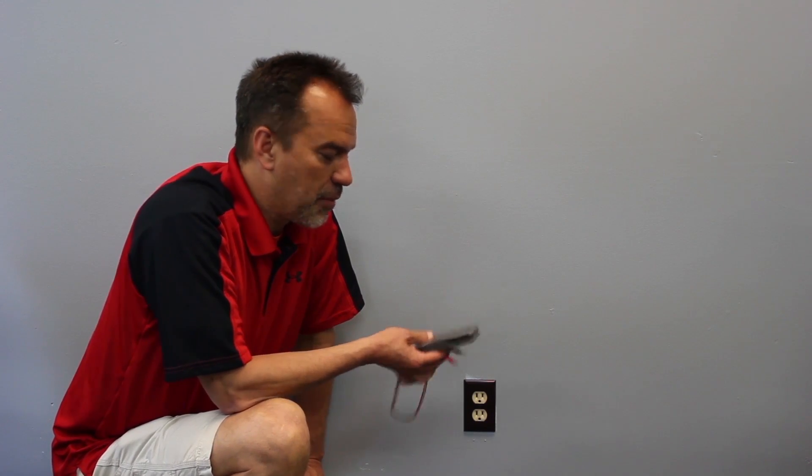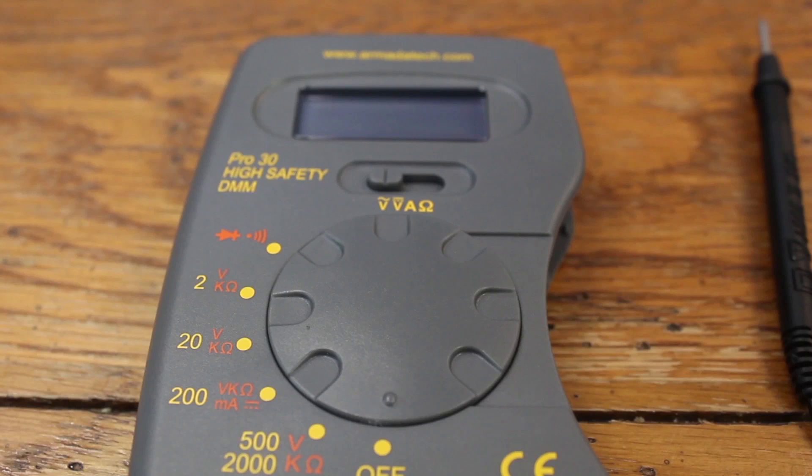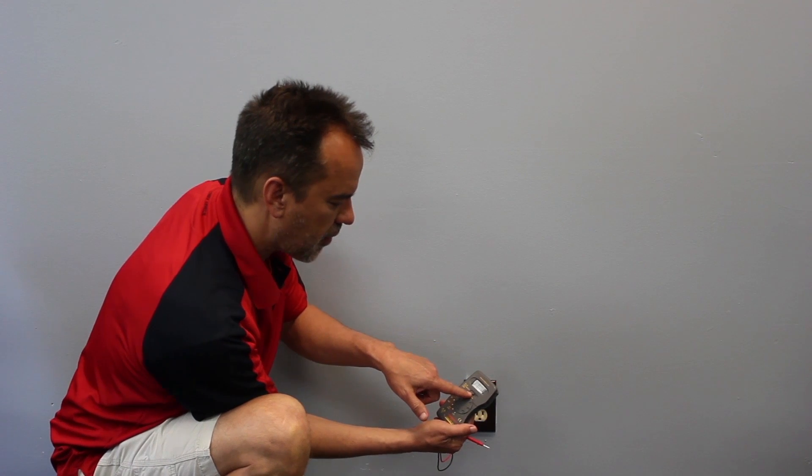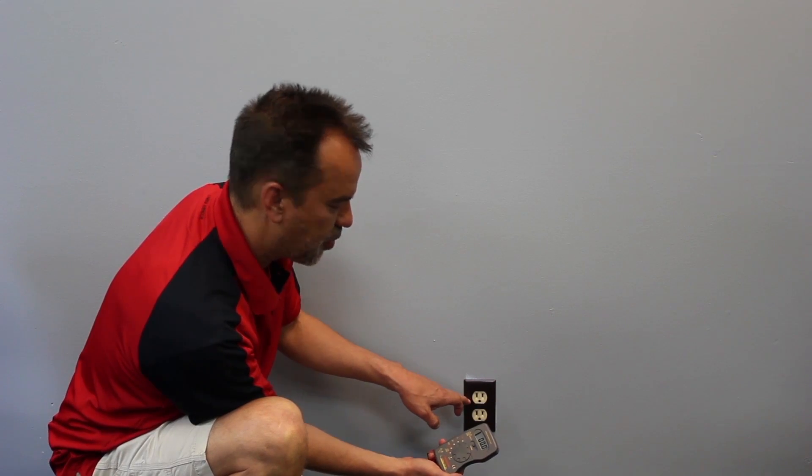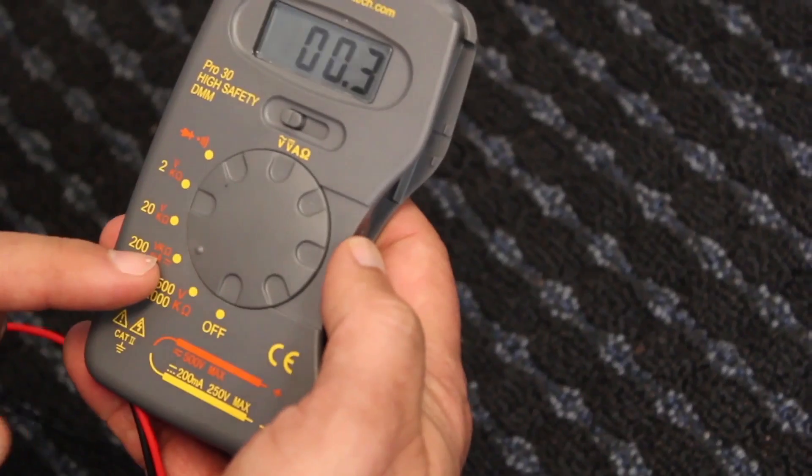So the way we do that is with a multimeter. There's lots of different styles of multimeter. This is our Pro 30. It's a manual multimeter so I have to select AC voltage and I have to select a range that's appropriate. In this case these outlets usually put out 110, 120, so I'm going to put it on the 200 range. I'm going to insert the probes into the outlets.